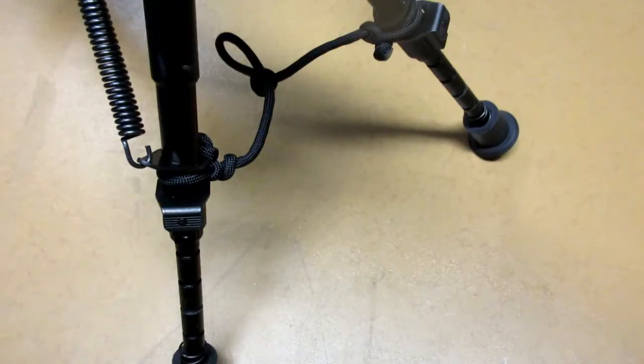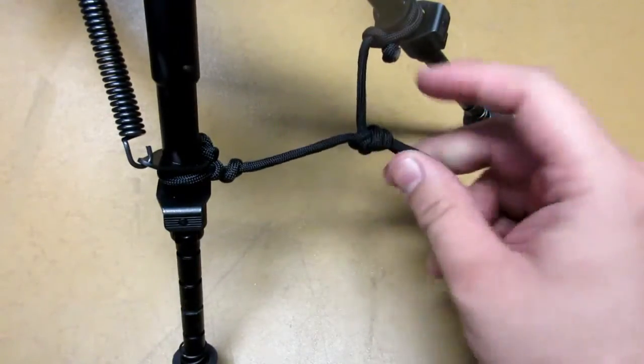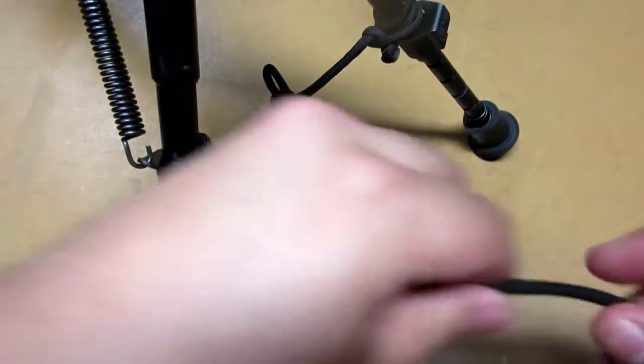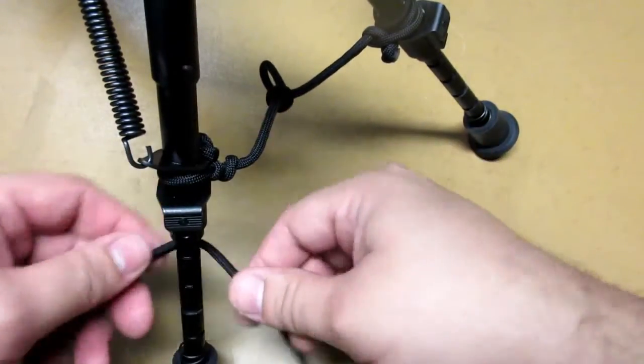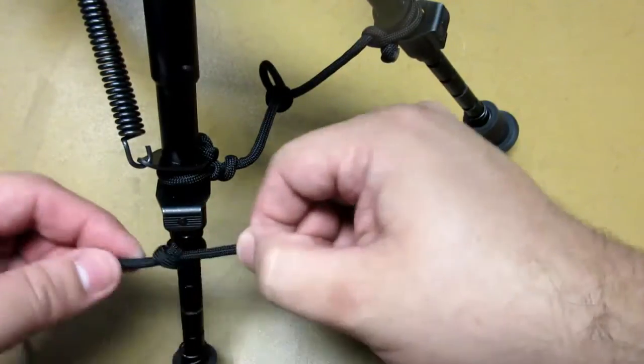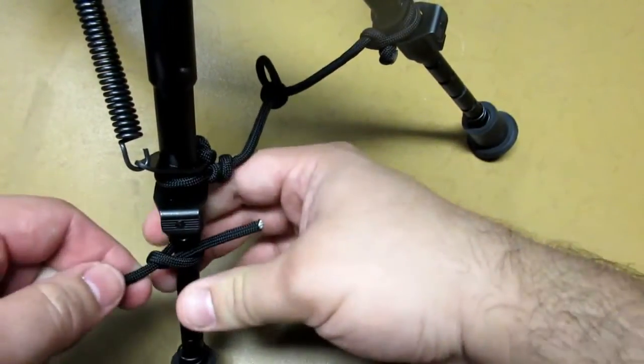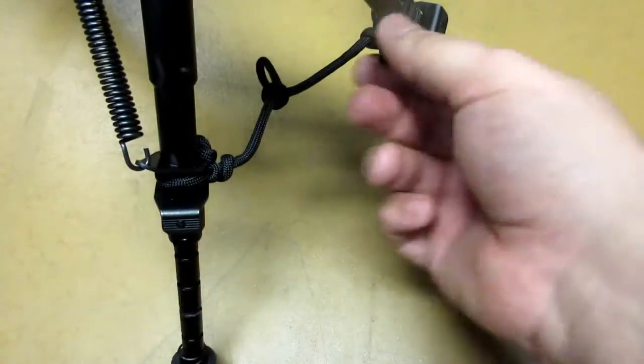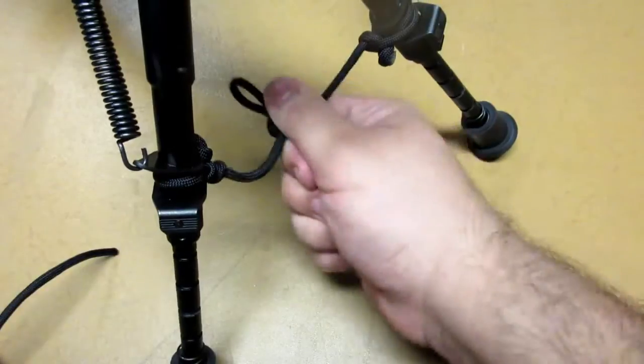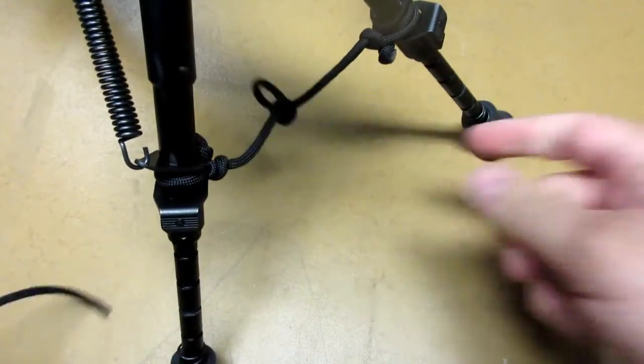Since we already have our 550 cord mounted, we'll just be showing you a quick little demo on how to do it. Any knot will do from a square, bowling or figure eight if you really want, but just about anything will do. On here we have modified score knots in order to prevent it from loosening up or coming undone over time.